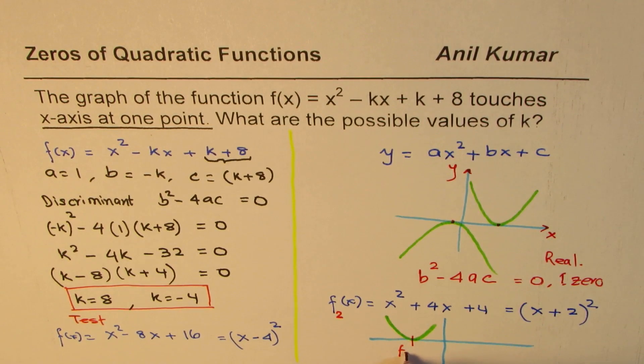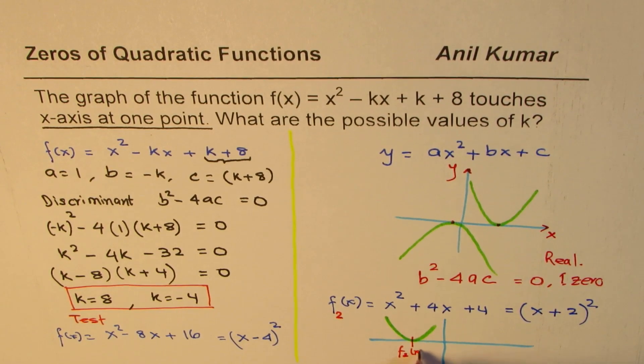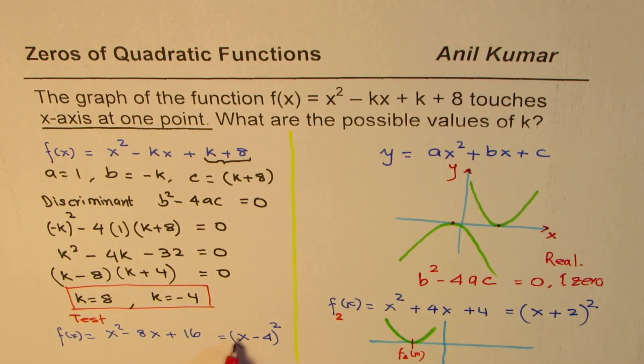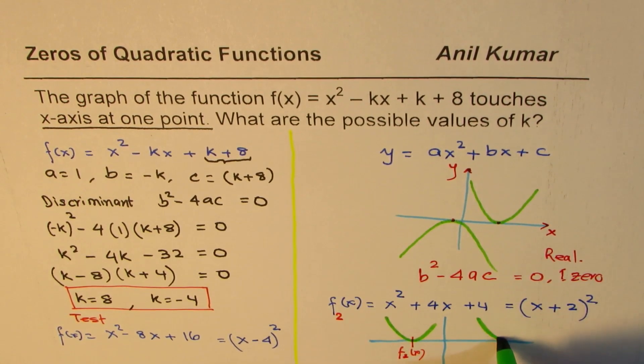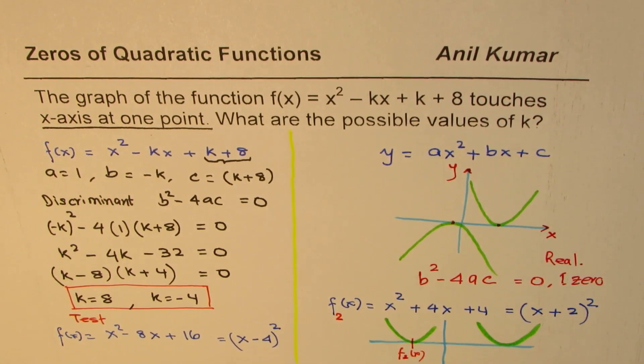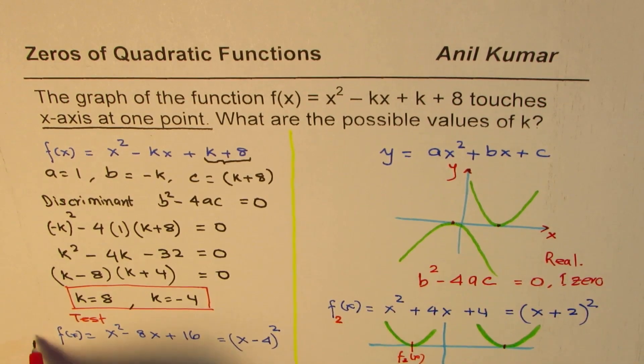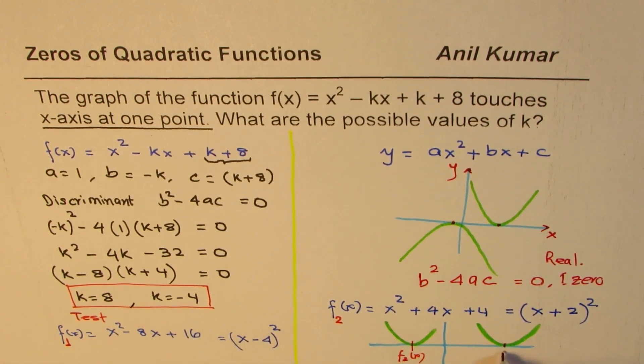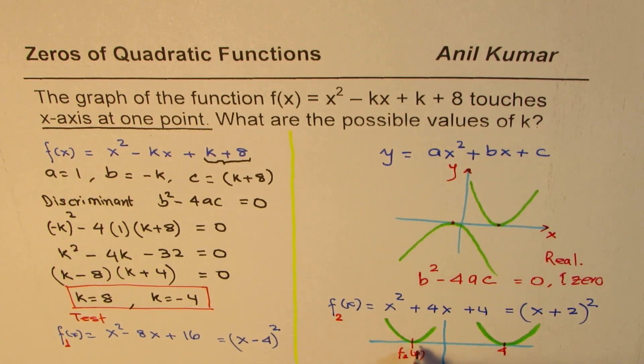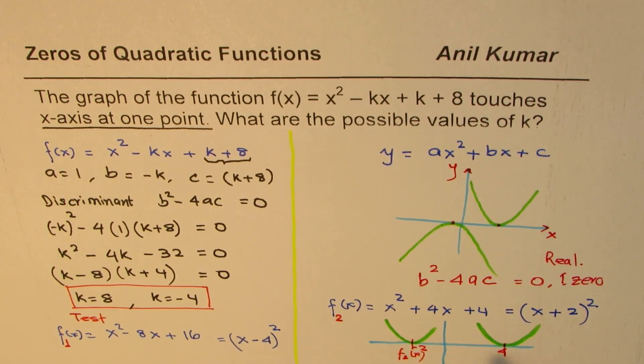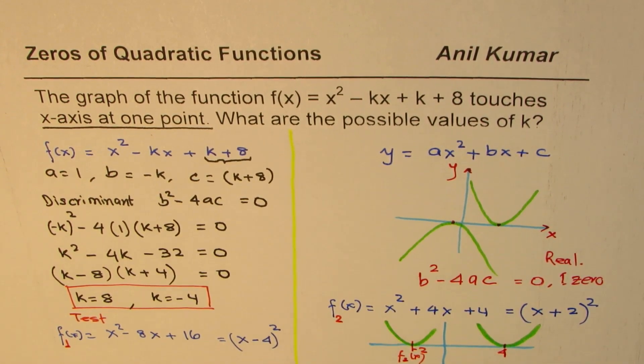The other one is minus 4. So this is at 4. So this parabola is kind of opening up right there. So this is my first function, which I'm writing as f1. This point is at 4. This is at minus 2. So you have these two solutions. And as you can see,